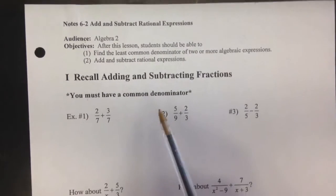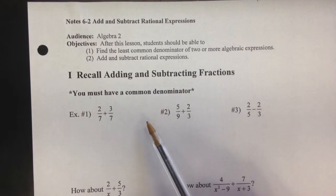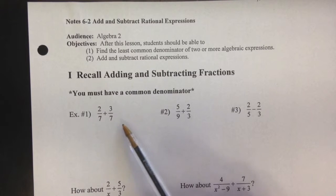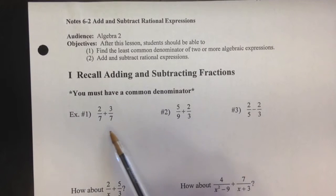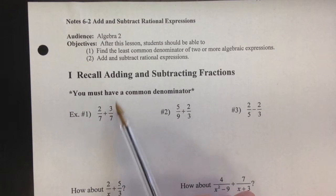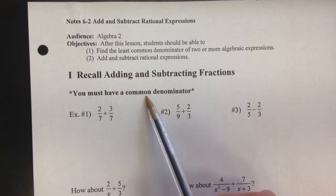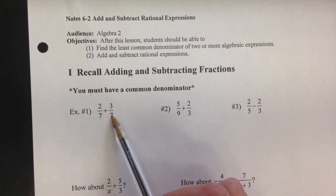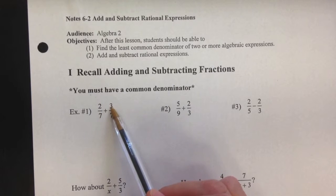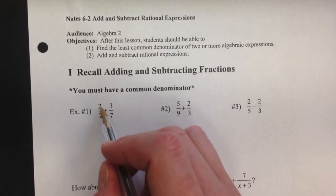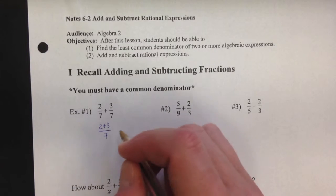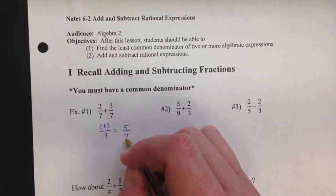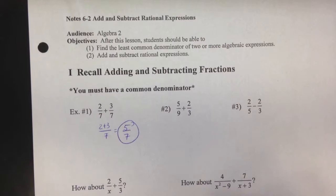So we're going to talk about adding and subtracting fractions, and we're going to be doing it with variables. But let's do a quick review with just numbers. When you add and subtract fractions, you must have a common denominator — that's the bottom of the fraction. If those are the same, we add or subtract the numerators. So 2 plus 3 over 7 gives us 5 over 7.